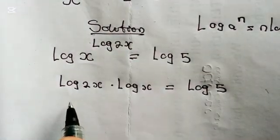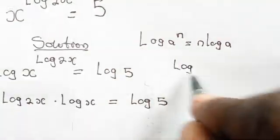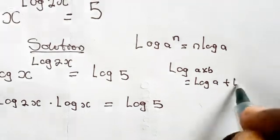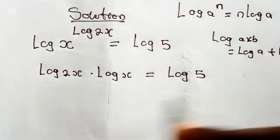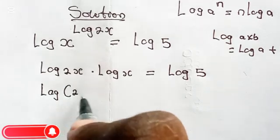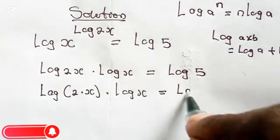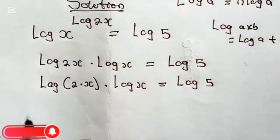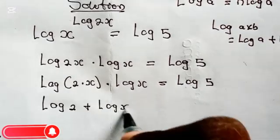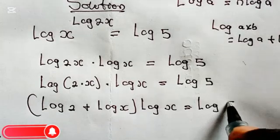Now let's expand this. Recalling the logarithm property: log(a × b) = log a + log b. So we write log(2x) as log 2 multiplied by x, giving us log 2 plus log x, all in brackets, multiplied by log x equals log 5.